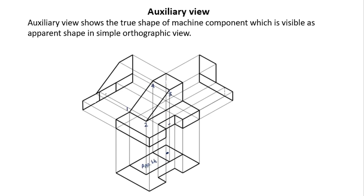Now, auxiliary view. In some figures, the true shape of the real object is not exactly shown — only the apparent shape is observed in any of the three standard views: front, top, or side. For example, in the top view we get only the apparent shape of an inclined surface with different dimensions. The auxiliary view will show the true shape of a machine component that appears only as an apparent shape in simple orthographic projections.